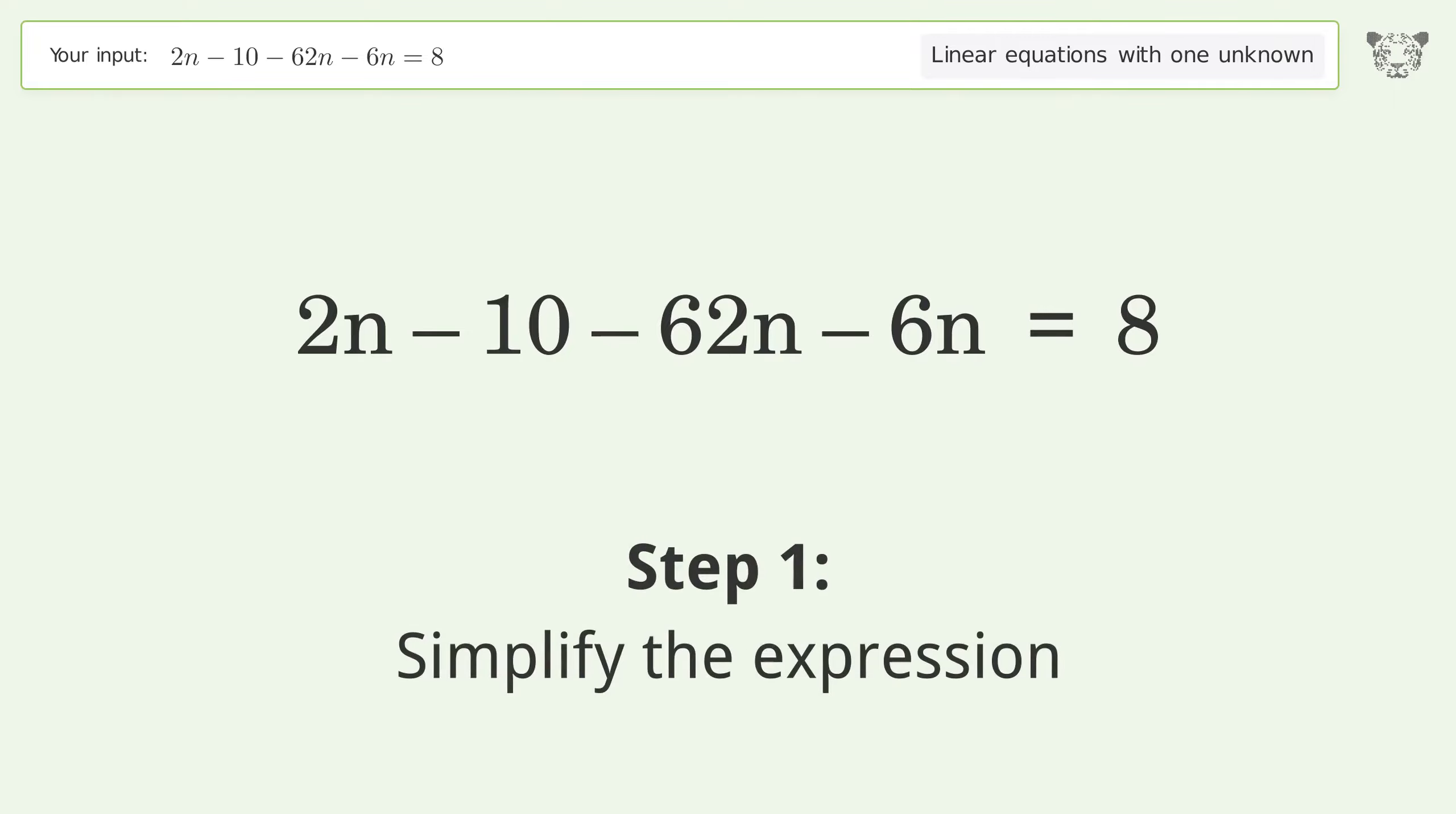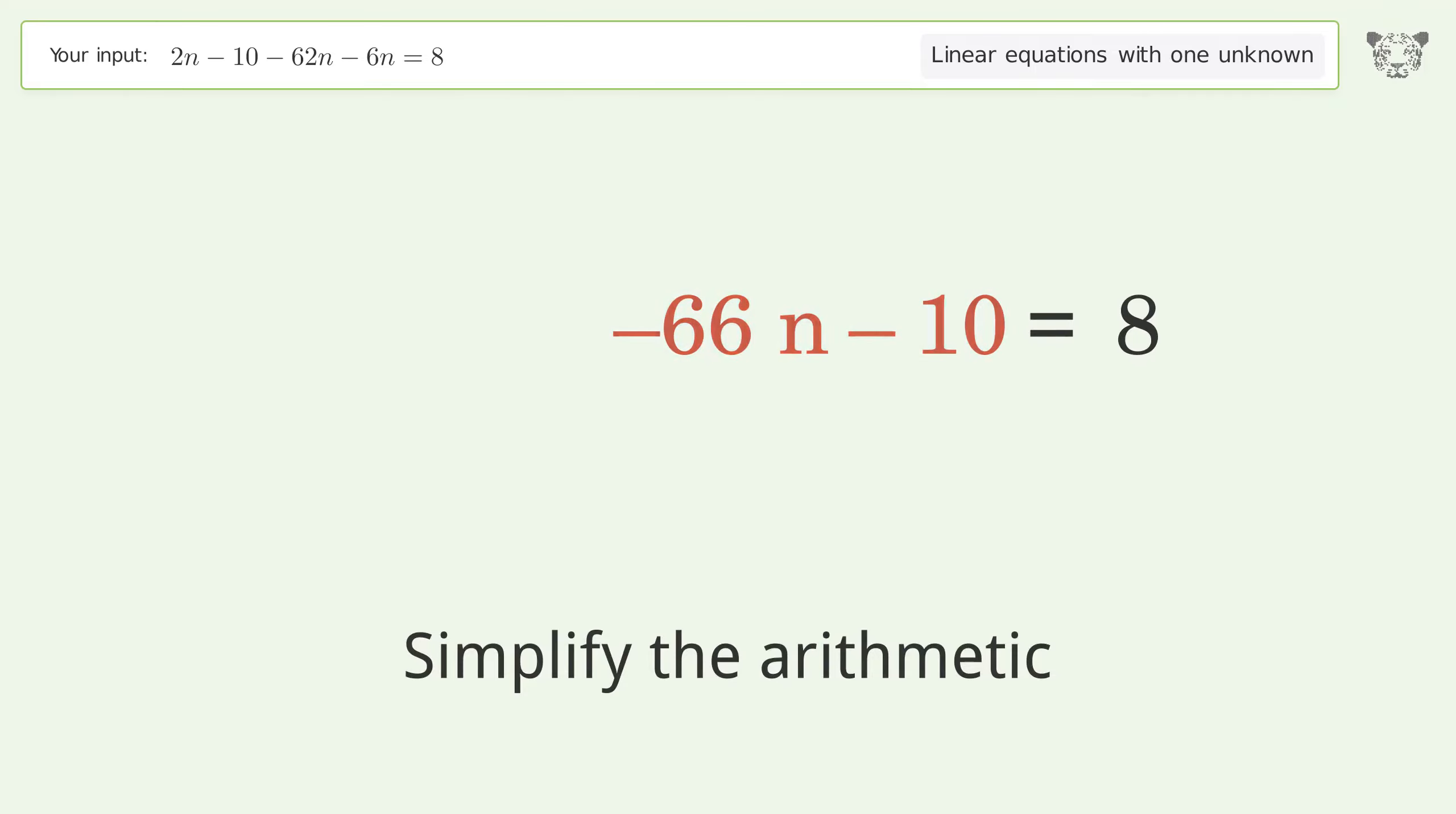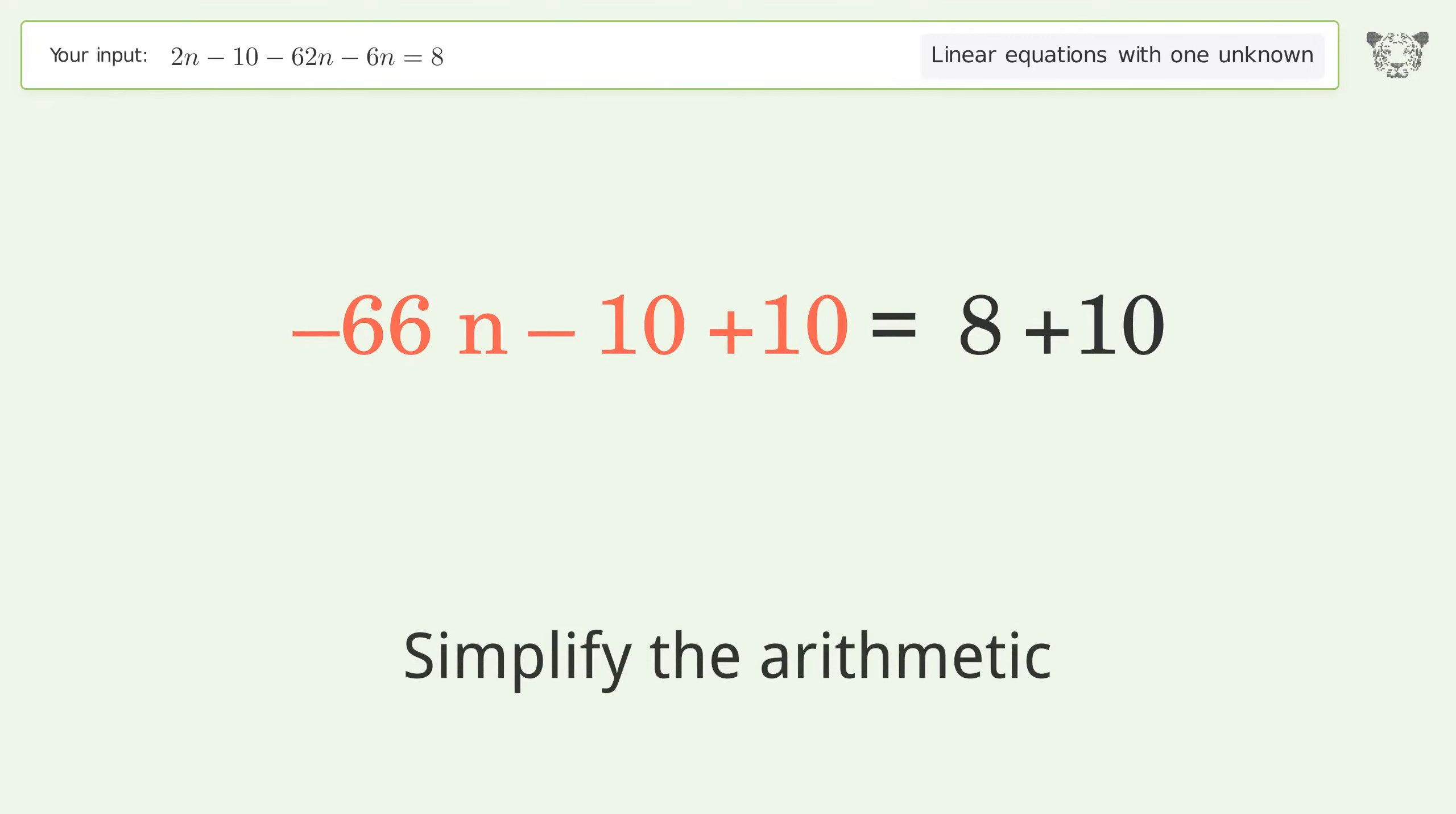Simplify the expression. Group like terms. Simplify the arithmetic. Group all constants on the right side of the equation. Add 10 to both sides. Simplify the arithmetic.